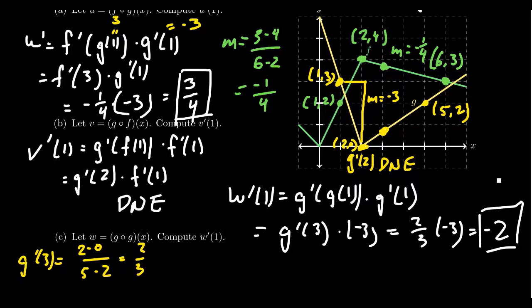This shows us how we can compute the derivative of a composition of functions if we have the graphs of the two composition factors — it all comes from the chain rule.